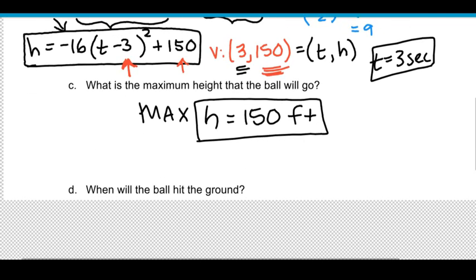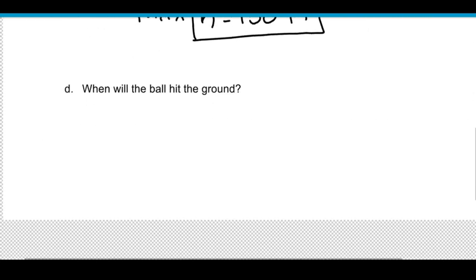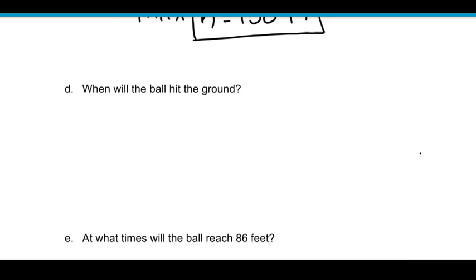Okay, so now let's take a look at part D. When will the ball hit the ground? So we have to translate this into an equation that we can solve. The ball would hit the ground when the height is how high? Well, zero. So we had a function for height and where there's an h, we're going to say zero because if the height is zero, the function is on the ground.